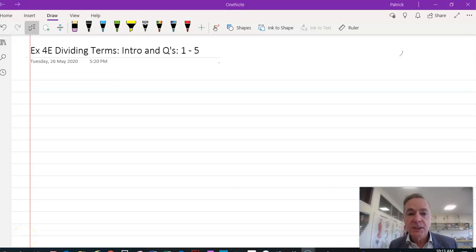Exercise 4e, which we want to have a look at now, is dividing algebraic terms. We looked at addition and subtraction of like terms, and in 4d we looked at how we could multiply algebraic terms. Now we want to look at how we can divide algebraic terms.